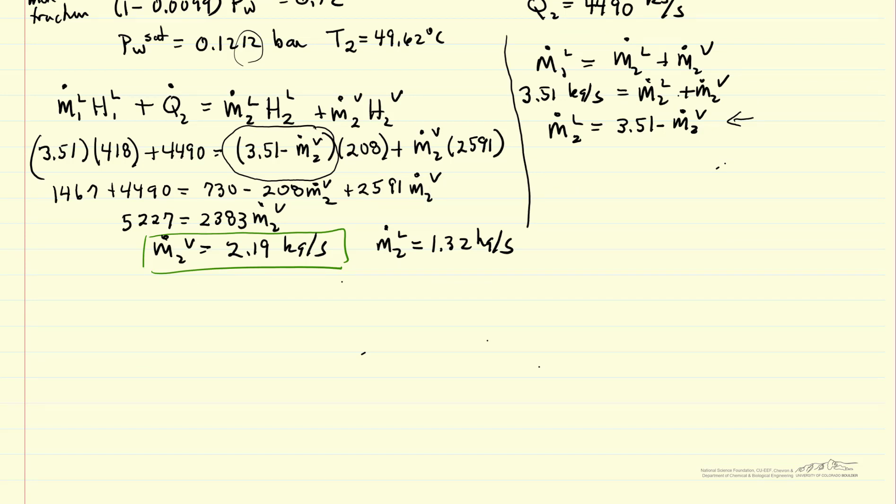Now we're able to calculate the steam economy because the steam economy is going to be the mass flow rates of vapor evaporated in the first and the mass flow rate of vapor evaporated in the second evaporator divided by the mass flow rate of steam fed to the system. So steam economy is actually slightly greater than two. And this results because we're actually feeding in a feed that's a higher temperature than the first evaporator. If we fed it in at lower temperature, we would expect the steam economy for two effects to be less than two.